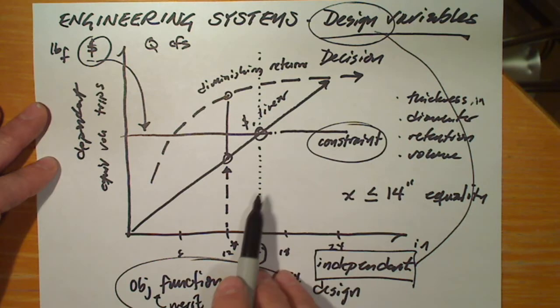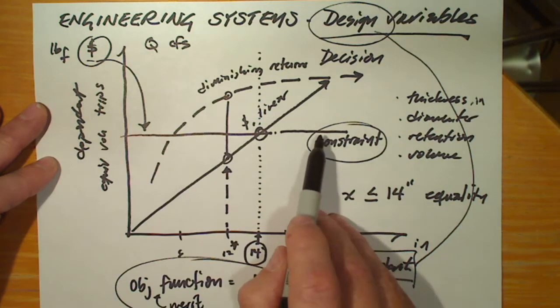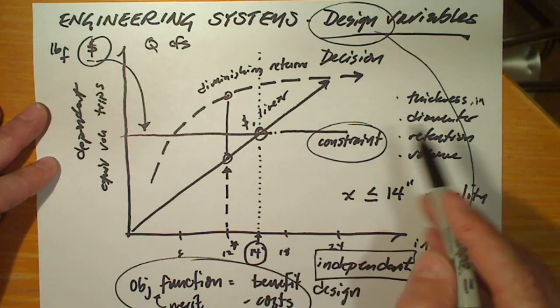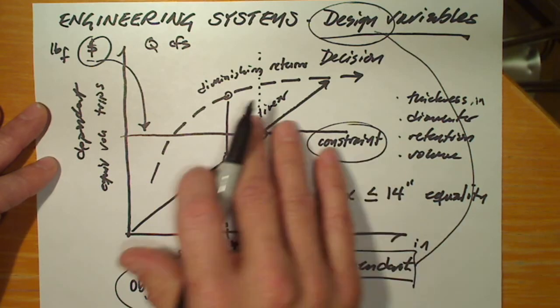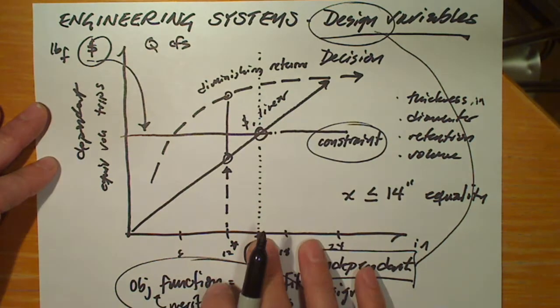And finally, the third word is the constraint. What are those aspects of the problem that we have to live within? That is, which of those equations constrain our design?